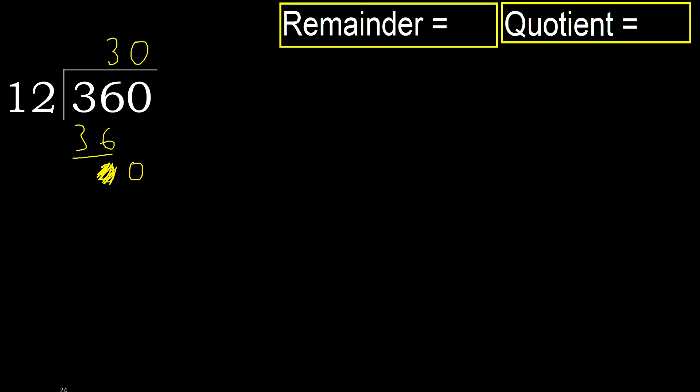Always complete with 0. Complete, because here we finish it with this number. 360 divided by 12 is 30.